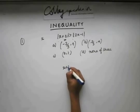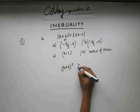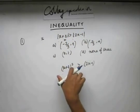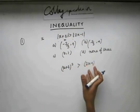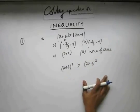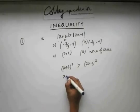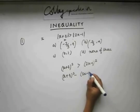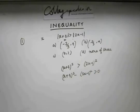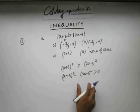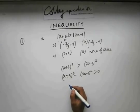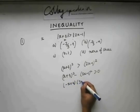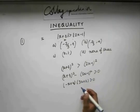Let's square both sides. Since both sides are positive quantities, squaring will keep the inequality as it is. After squaring and rearranging, you bring terms to one side to get an expression in the form a² − b², which you can expand.